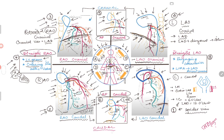As covered in a previous talk, the straight RAO view is also good for crossing the aortic valve. Since the coronary arteries will be anterior and posterior, your catheter will be facing right or left, and when pushing your wire there is a very small chance of going into the coronary — making this a very safe view for crossing the aortic valve.